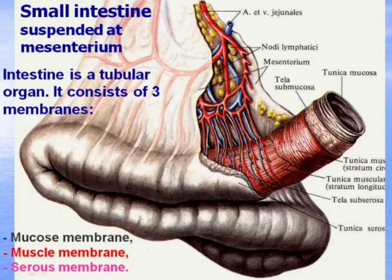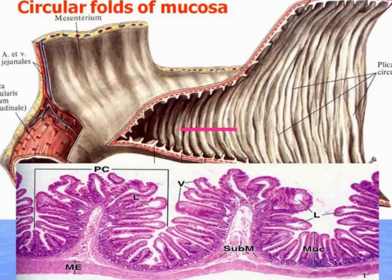The small intestine is suspended at the mesentery; you can see the intensive blood supply of the intestine. It is a linen tubular organ consisting of three membranes: the mucosa membrane on the surface, the muscle membrane, and the serosa membrane outside. In the section of the small intestine you can see transverse folds of the mucosa, which increase the surface three times.